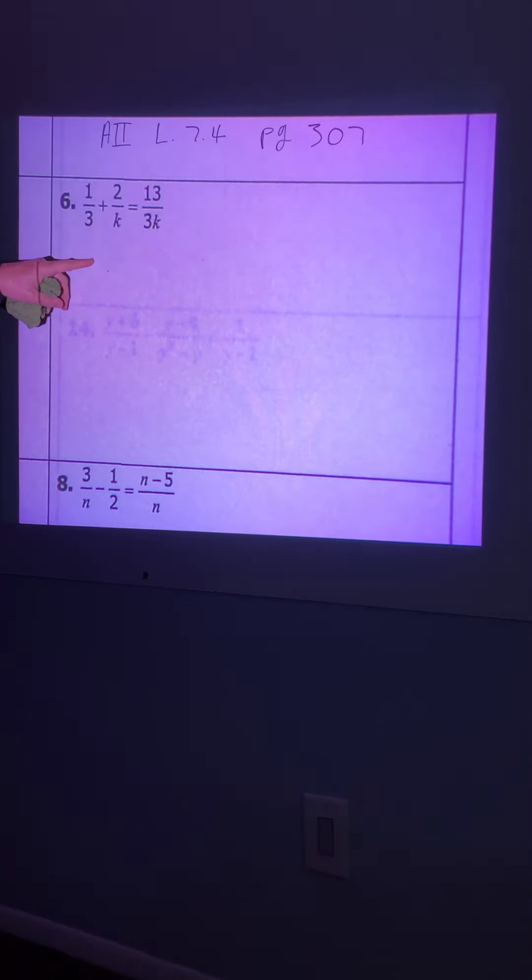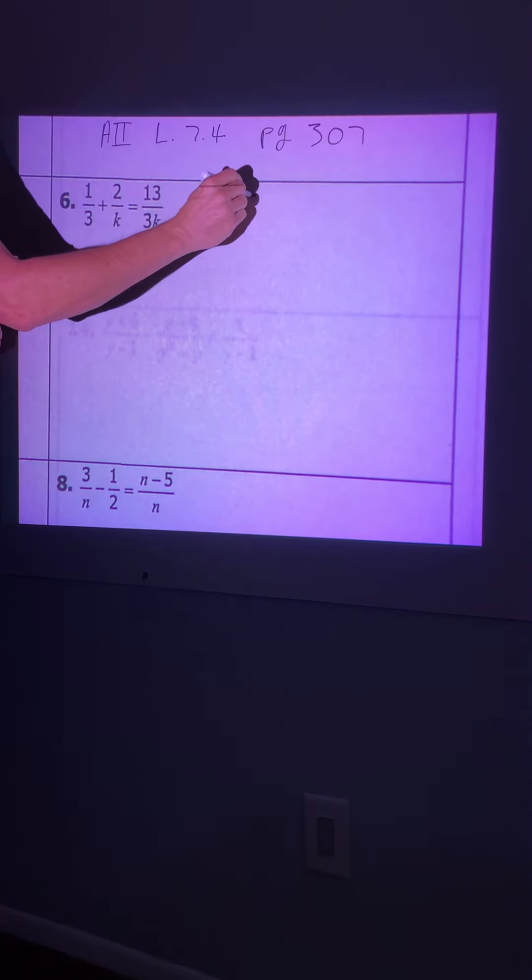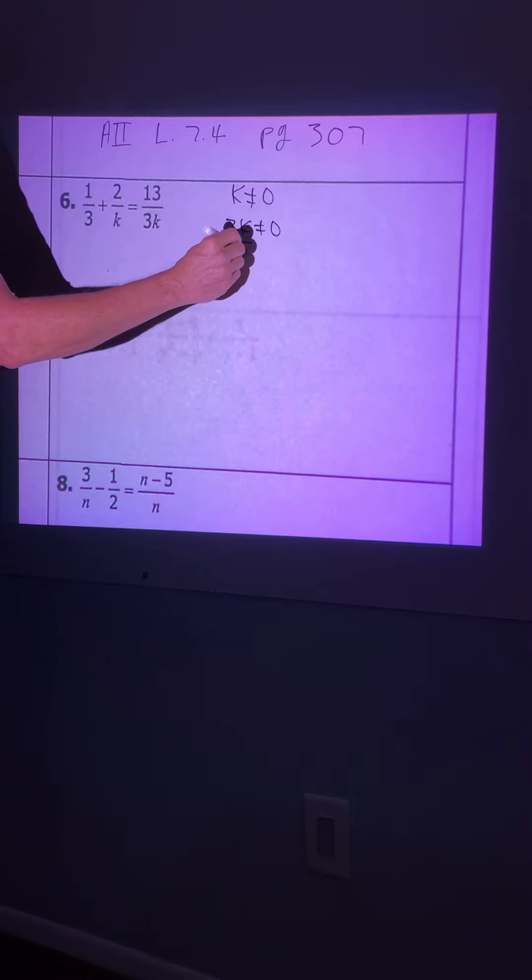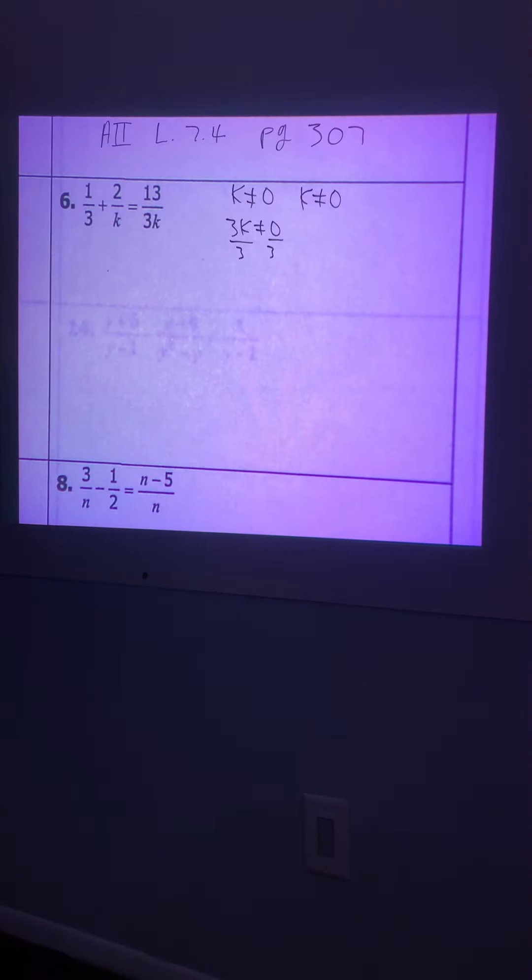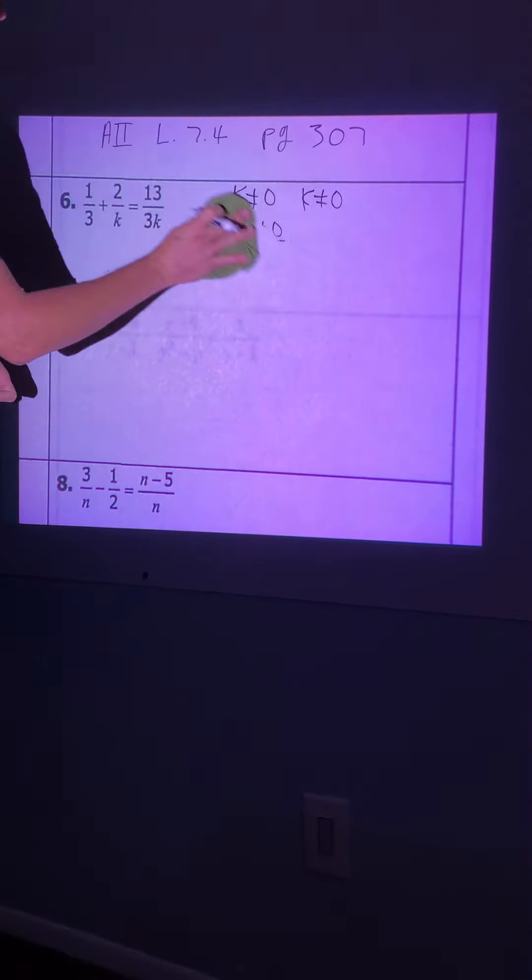Let's do the restriction first. Remember, restriction is values that you're not allowed to have as a solution. In this situation, you look at the denominators. You have a variable of k in one of the denominators, so k cannot be 0. Also, this one would be 3k cannot equal 0, but if you solve for k you're still going to get the same restriction. So you just cannot yell out 0. Because if you plug in 0 here or if you plug in 0 here, then it's undefined because you can't divide by 0.